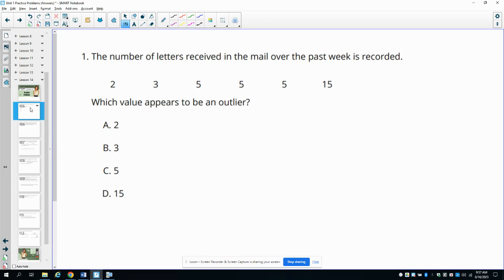Number one says that the number of letters received in the mail over the past weekend has been recorded. Which value appears to be an outlier? Remember that an outlier is a number that's significantly different than the rest of the data. That's going to be the 15 in this one—it's much larger than the other ones.